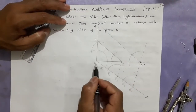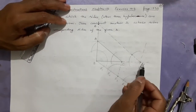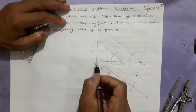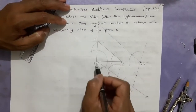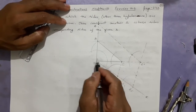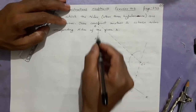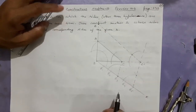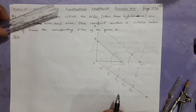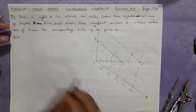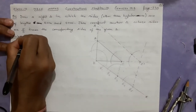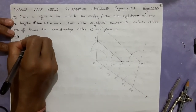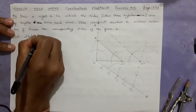Look at your triangle A dash B C dash. Look at the smaller triangle ABC — that is a right triangle. The bigger one is also a right triangle, a similar triangle. This is all that you do here in the steps of construction.